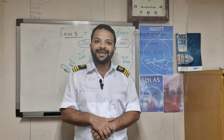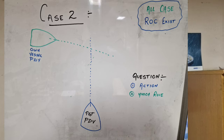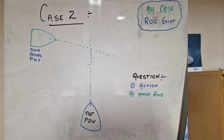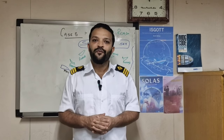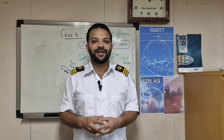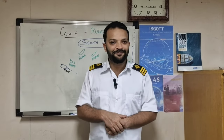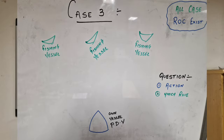Case number two — this is also a normal situation. Both vessels are power driven vessels. The distance between both of them is four nautical miles. What action will you take and as per which rule?